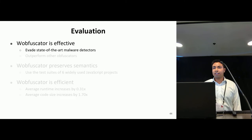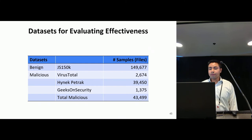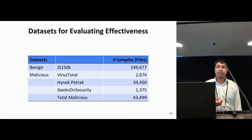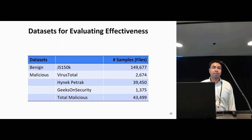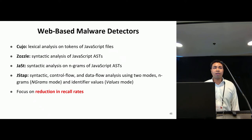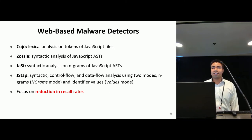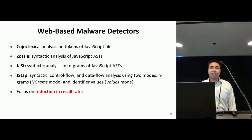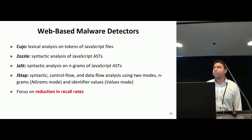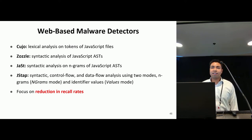For this talk, I'll focus on the effectiveness at evading state-of-the-art detectors. To train and test the detectors, we construct a dataset of over 149,000 benign JavaScript samples and over 43,000 malicious JavaScript samples from several datasets. We evaluate WafiSkater on four state-of-the-art learning-based static malware detectors: Cujo, which performs lexical analysis on tokens; Zazzle, which performs syntactic analysis on ASTs; Jast, which performs syntactic analysis of n-grams of AST syntactic units; and Jstop, which performs syntactic, control flow, and data flow analyses using two feature extraction modes — n-grams mode and values mode.